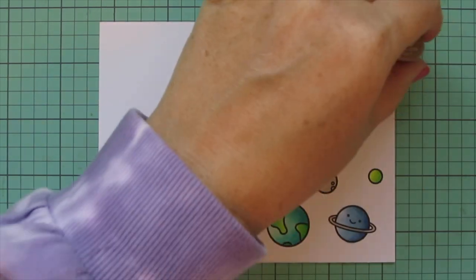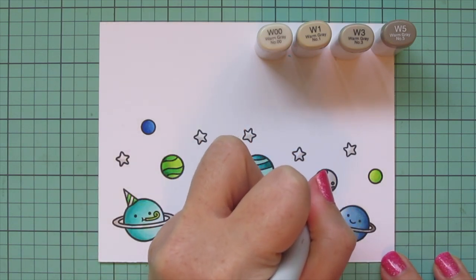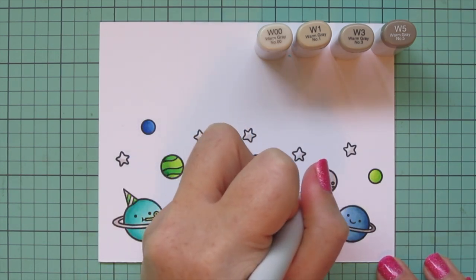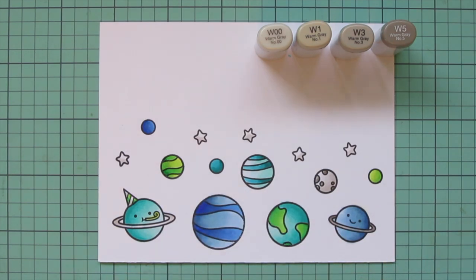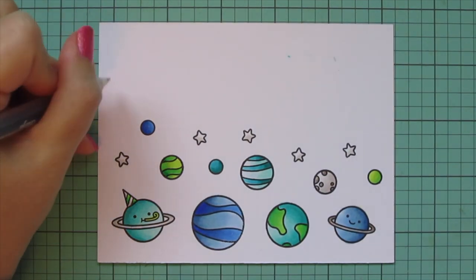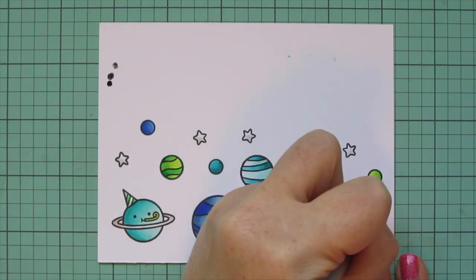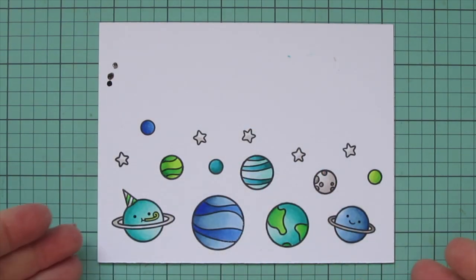And then I'm going to pull in the W5, like I said, to add more contrast to that ring around the planet, and then also to do the little craters on the moon, blending that out with the W3. Then I'll take a black Sakura Gelly Roll pen and go over the eyes of the two planets with the smiley faces. And then I'm going to trim these images out with their matching dies.